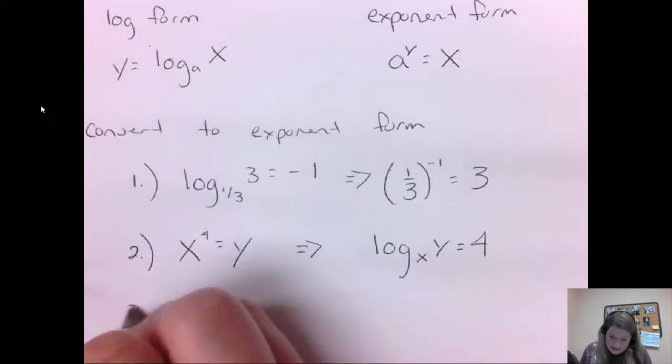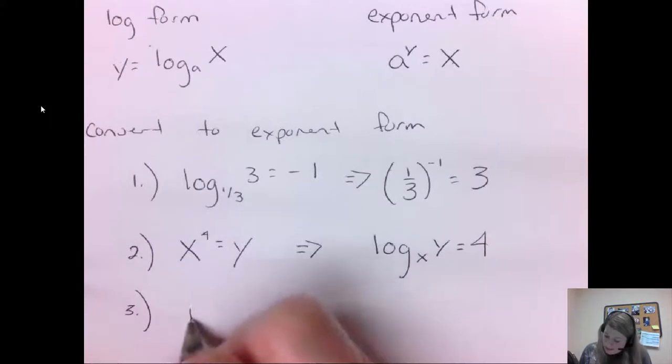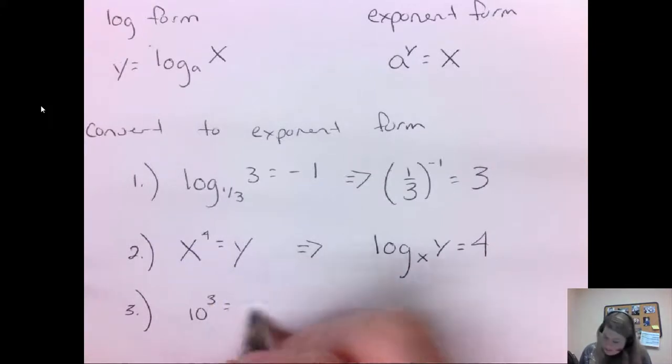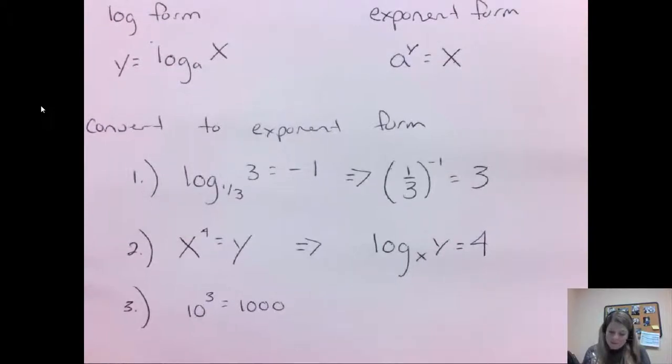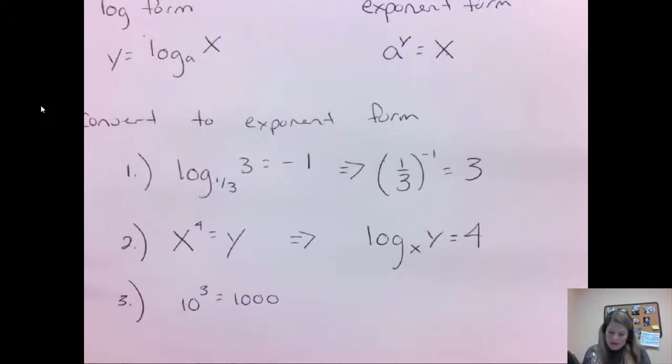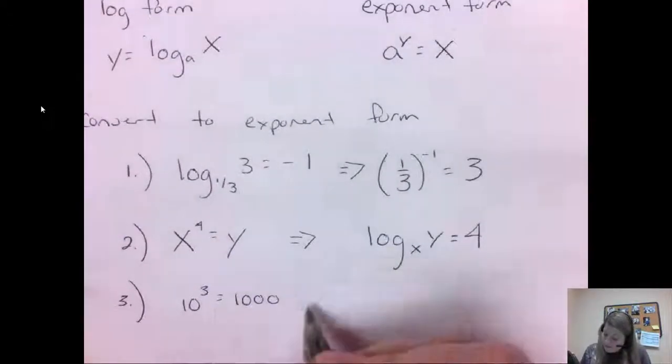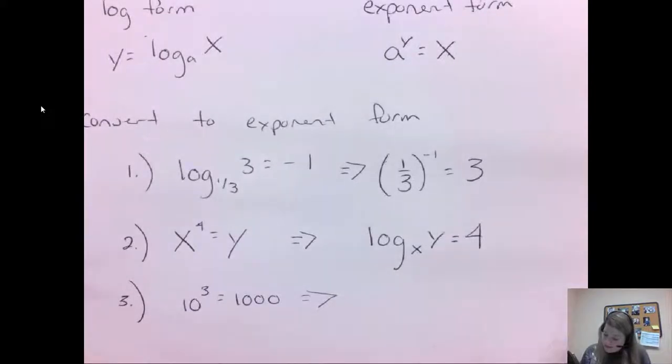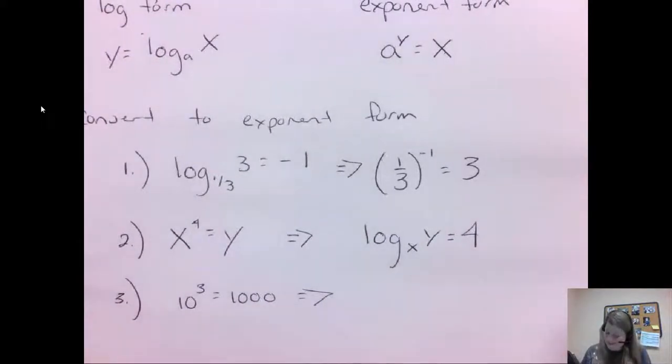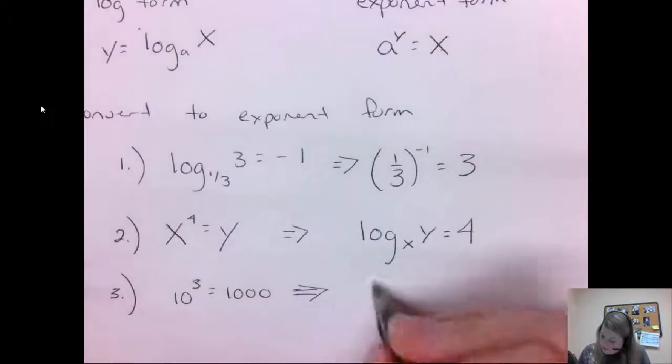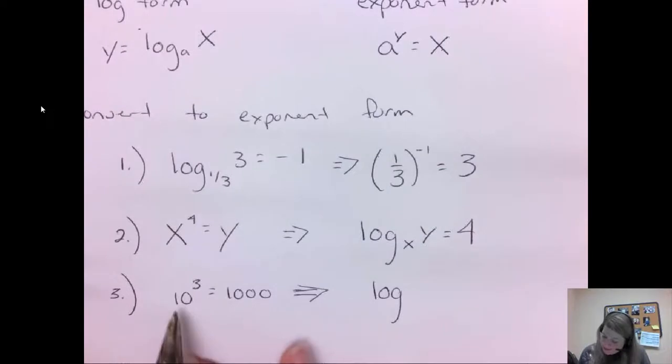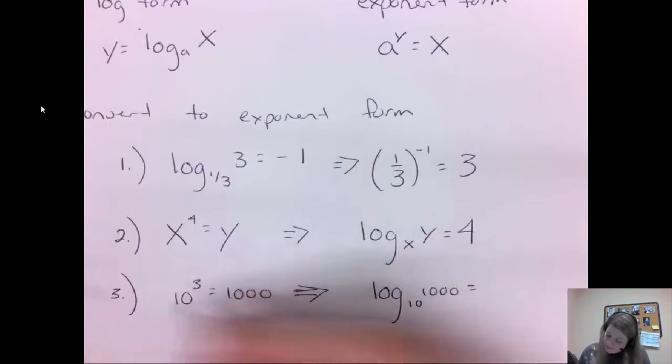Let's do another one like that. What if I have 10 to the 3rd equals 1,000? How can I convert this to log form? So then we have our log, and the power is your base, so we have log of 10, and then the 1,000 will go here, equals 3. So that's converting between the two.